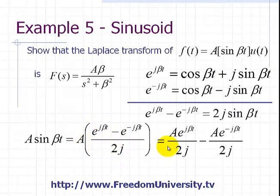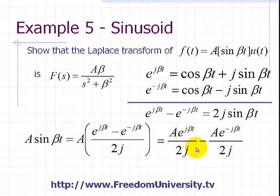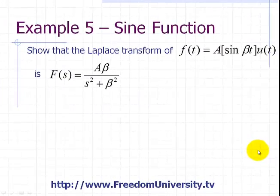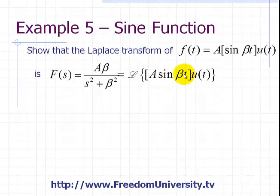We can break up this sum into two exponentials: a·e to the j beta t divided by 2j, minus a·e to the minus j beta t divided by 2j. We've basically broken up our function f(t) into two different functions. Now we're going to apply the linearity property of the Laplace transform to find the Laplace transform of this sine function.